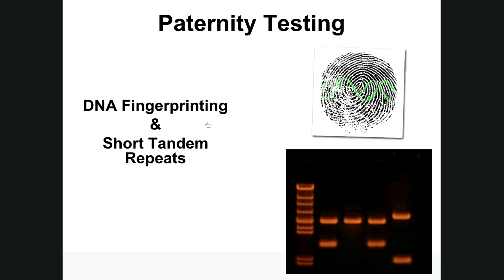They discovered that certain combinations of bases in this junk DNA can be passed on from one generation to another. With advancements in DNA sequencing — especially automated sequencing — they uncovered that this junk DNA consists of certain combinations of bases that get passed on from parent to offspring. These combinations serve as a DNA fingerprint, and unlike our physical fingerprints, a DNA fingerprint exists in many different forms across different chromosomes, making it much more reliable.